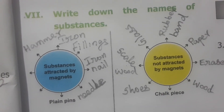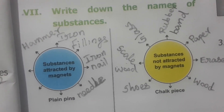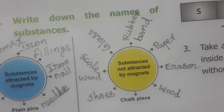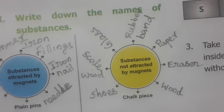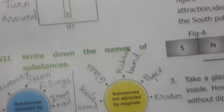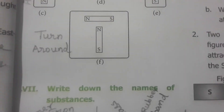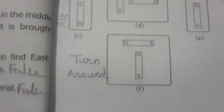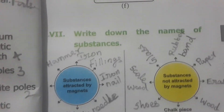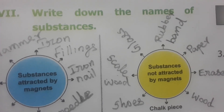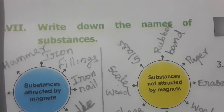Substances attracted by magnets include iron fillings, iron nails, needles, plane fillings, and hammer. Substances not attracted by magnets include rubber band, paper, eraser, wood, chalk piece, shoes, scale, and glass. That's all about the one-mark book back evaluations from this lesson. Go through it again and again for familiarity. Thanks for listening — do share with your friends and subscribe to Satish Science Teacher YouTube channel.